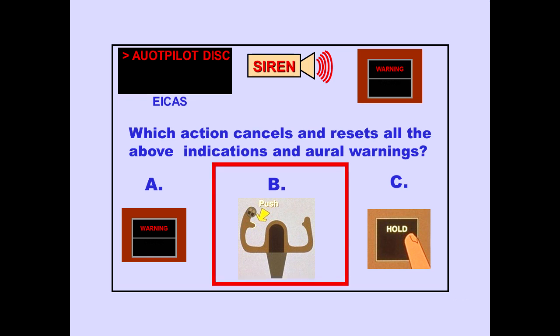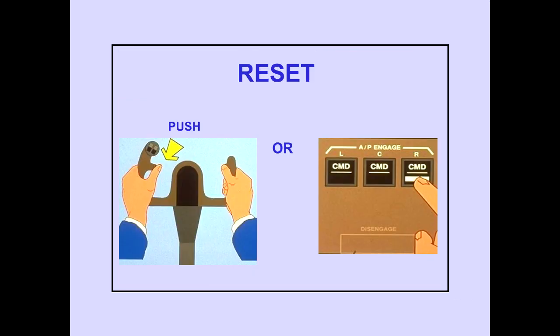Answer B is correct. Pushing either disengaged switch or engaging an autopilot cancels and resets all autopilot disengaged oral and visual warnings.